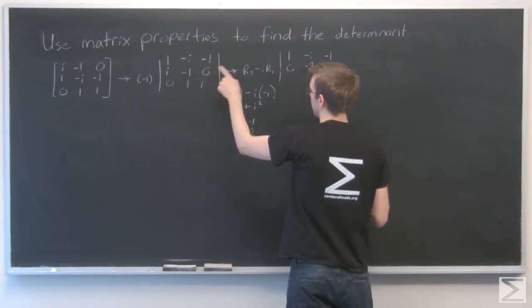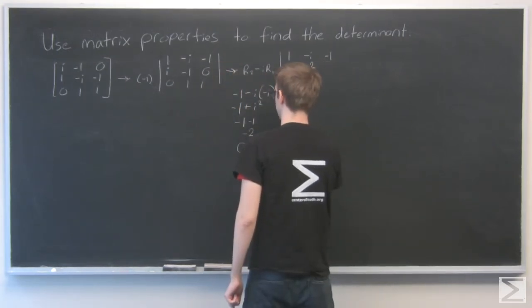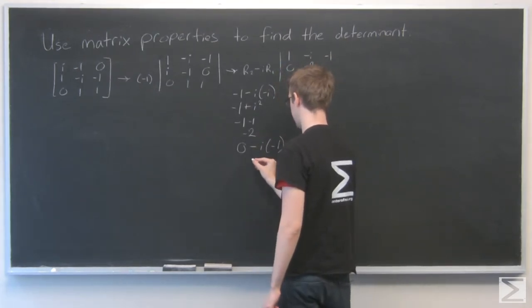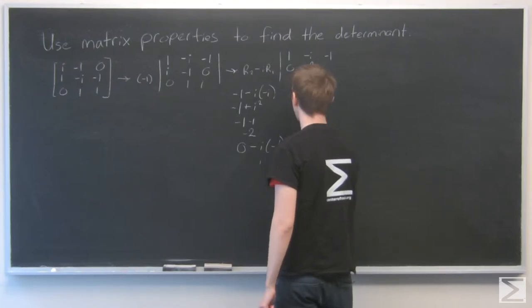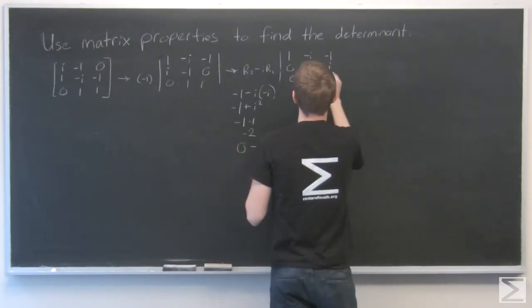Now 0 minus i times row 1, that's 0 minus i times negative 1, and that looks just like i. And I'll keep this 0, 1, 1.